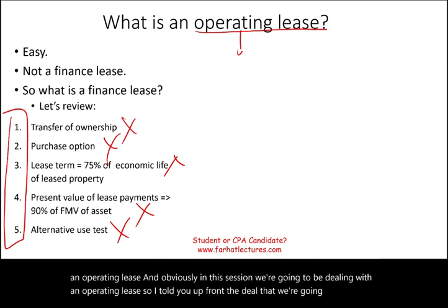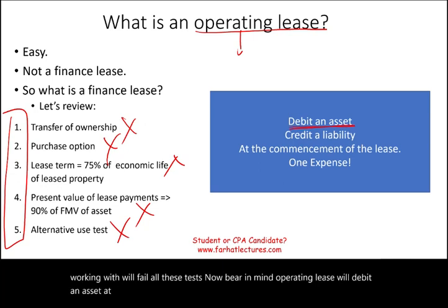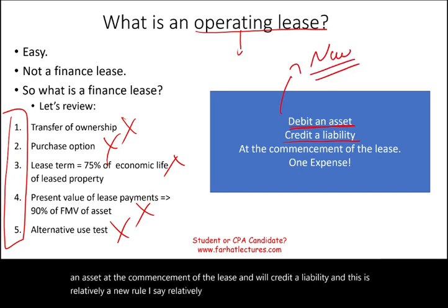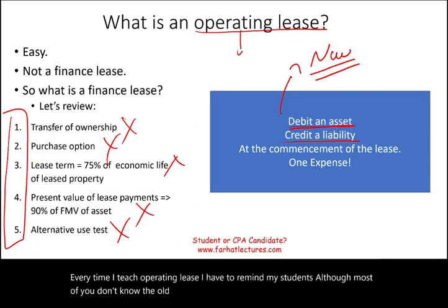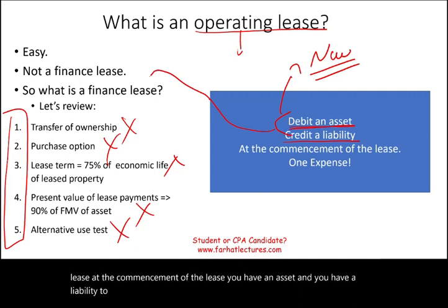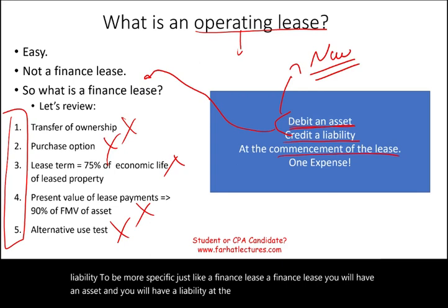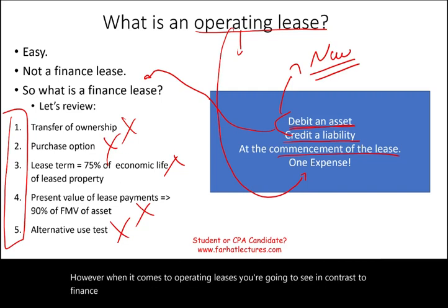In this session we're dealing with an operating lease that will fail all five tests. Bear in mind: under current rules, an operating lease will debit an asset and credit a liability at the commencement of the lease. This is a relatively new rule — previously there was no asset or liability recorded, but that's no longer the case. Like a finance lease, you'll have an asset and liability at commencement, but for operating leases you'll have only one expense rather than two.